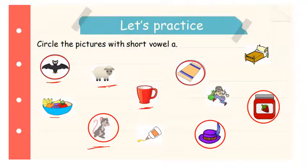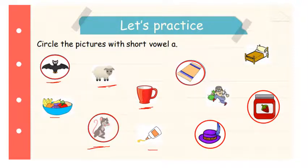Here we have a MUG. Can you hear any short A sound in the word MUG? M, A, MUG — no. So don't circle it. Here we have GLUE. Can you hear any short A sound in the word GLUE? No, no, no. Let's move on. Here we have a RAG: R, A, G — RAG. Yes, we can hear a short A sound in the word RAG, that's why we have to circle it. What can you see here? This is a THIEF. Can you hear any short A sound in the word THIEF? No, so don't circle it. Let's move on.